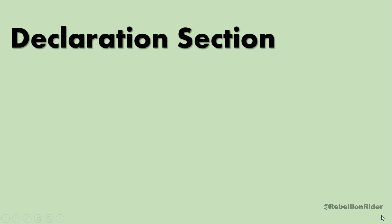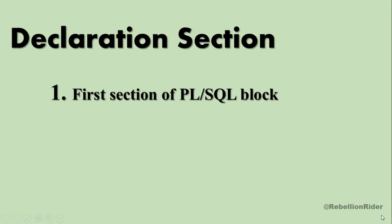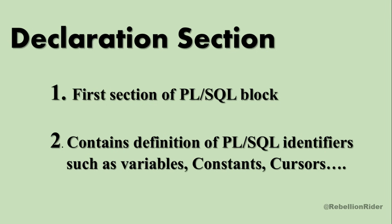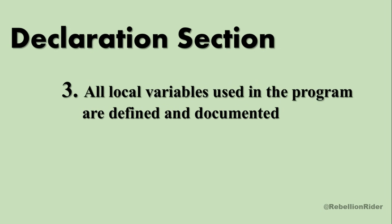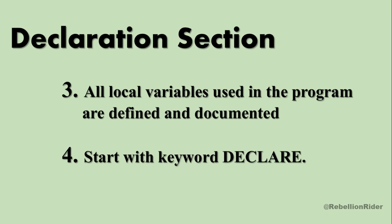Declaration section: this is the first section of a PL-SQL block which contains definition of PL-SQL identifiers such as variables, constants, cursors, and so on. This is the place where all local variables used in the program are defined and documented. Also, the declaration section always starts with the keyword DECLARE.